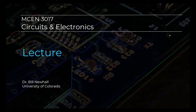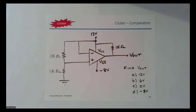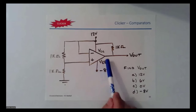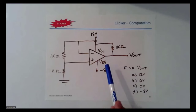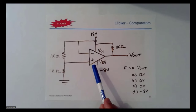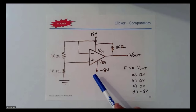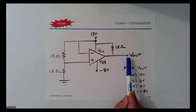I wanted to start off with a clicker problem on comparators because we haven't had one on comparators yet. Take a look at this problem. You have an op-amp — you can assume this is a specialized comparator chip that we talked about over the last couple of lectures. You have Vcc connected to 12 volts and Vee connected to negative 8 volts. The output is here, you have a pull-up resistor of 1k and a couple of resistors.